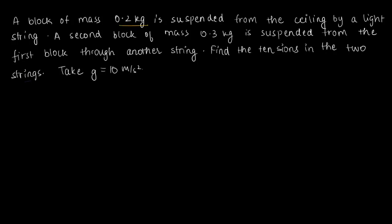A block of mass 0.2 kilograms is suspended from the ceiling by a light string. So if this is the ceiling, then through a light string you have a block of mass 0.2 kilograms.